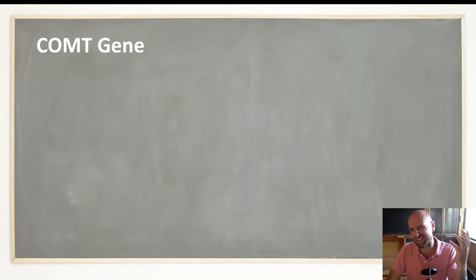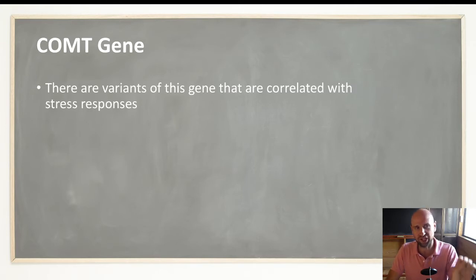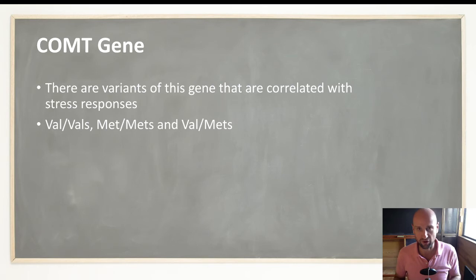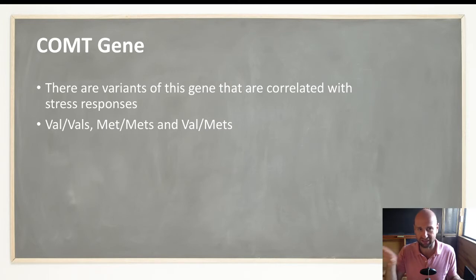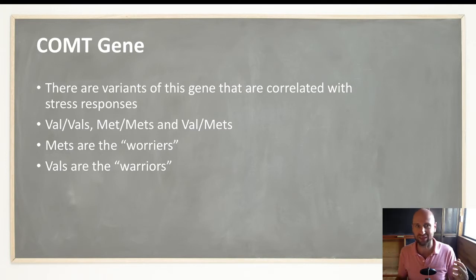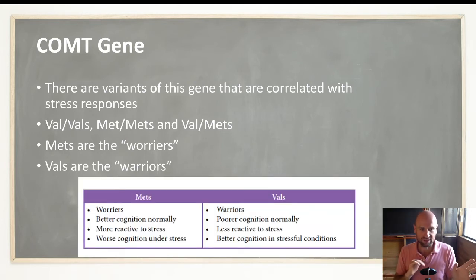Which one are you? We can't really find that out without doing genetic testing, but play along. The COMT gene has variants that are correlated with stress responses — similar to the MAOA warrior gene. There are three types of COMT gene variation: you might be a Val/Val homozygote, a Met/Met, or a Val/Met. The Mets are the worriers — they worry a lot. The Vals are the warriors. I remember this by thinking that 'Val' sounds like 'valiant,' and you need to be valiant to be a good warrior.